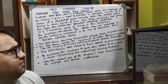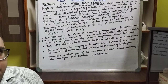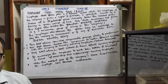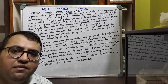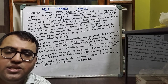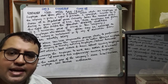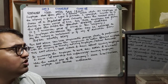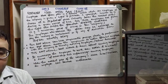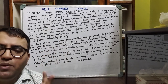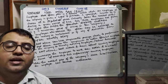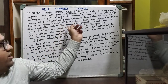Employee Stock Option Plan is a formal scheme under which a company gives the right to the employees to purchase shares of the company at a specified price — meaning the price will not be above the market price. Generally, it is below the prevailing market price, that is, the discounted market price, and this option is available during a given period of time.